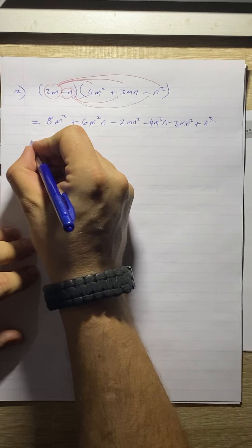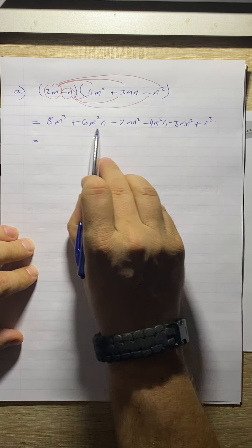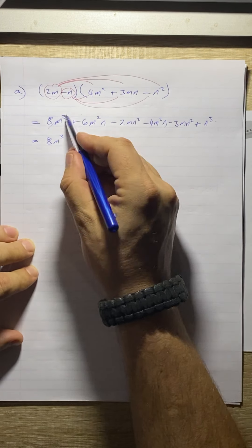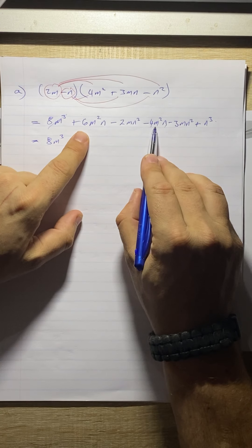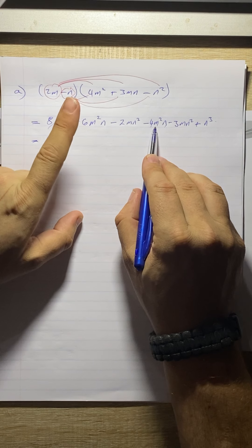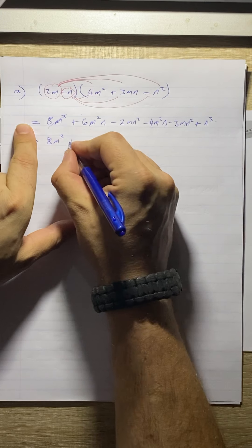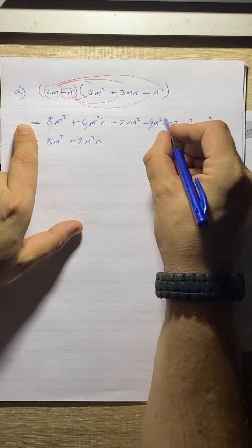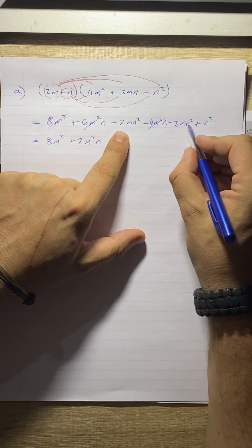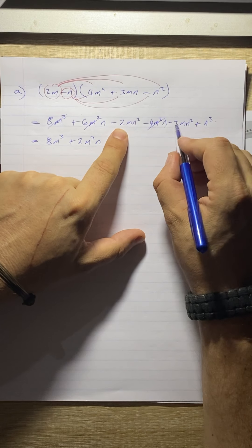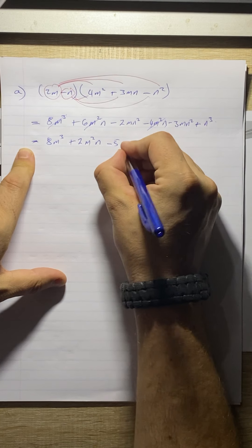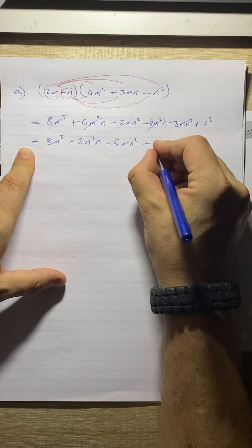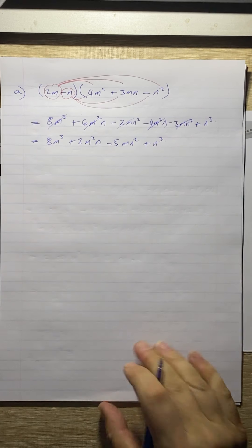I'm just going to look for like terms now. So there's no other m cubes, so it just becomes 8m cubed. Then we've got an m squared n. There's another m squared n. So we've got 6 minus 4 will give us plus 2m squared n. Over here we've got an m n squared and m n squared. So it's minus 2 minus 3 is minus 5m n squared. And then we're just left with that last term there. Pretty easy, huh?